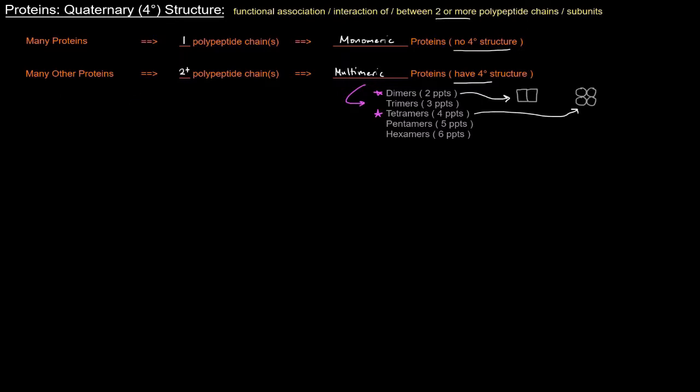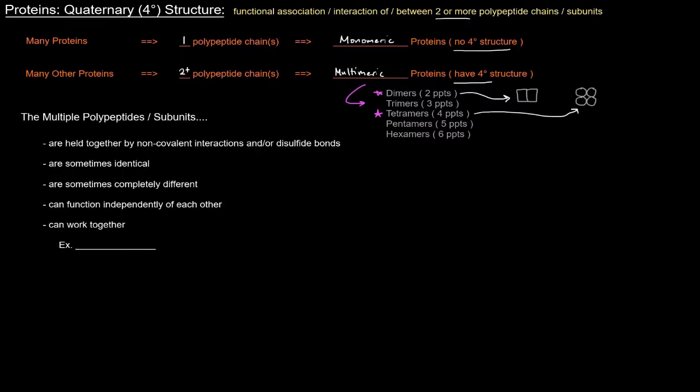So now when it comes to quaternary structure and you have multiple polypeptides that make up a protein, those multiple polypeptides or subunits are held together by both non-covalent interactions and/or disulfide bonds. So basically the same things that hold together a tertiary structure can also hold quaternary structure together.